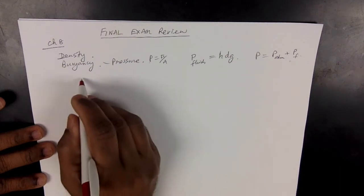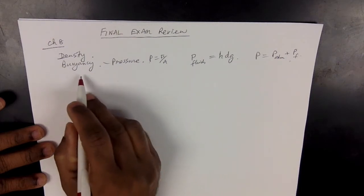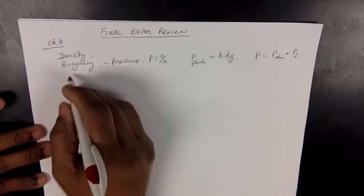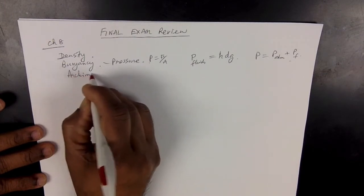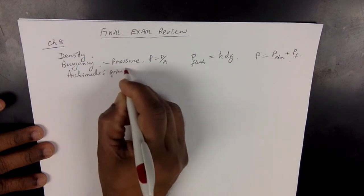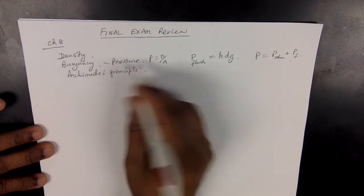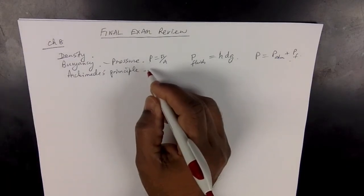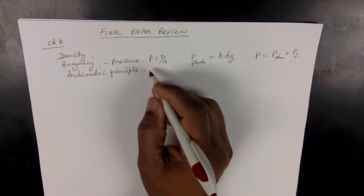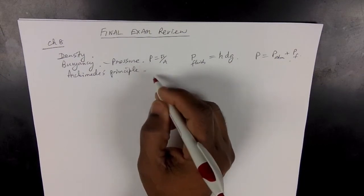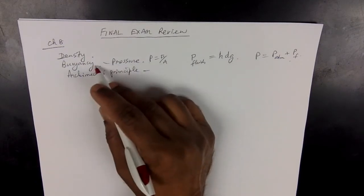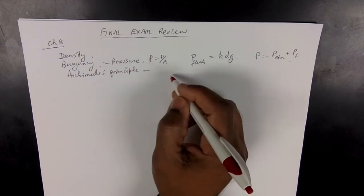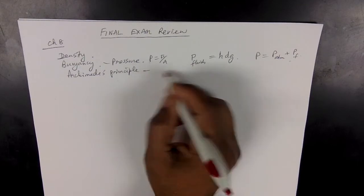Coming back to buoyant force: buoyant force is a force exerted by the fluid on an object, and it is an upward force. What explains buoyancy is Archimedes' principle. You should be able to read Archimedes' principle from page 272. Archimedes' principle states that the buoyant force exerted by a fluid is equal to the weight of the fluid displaced.